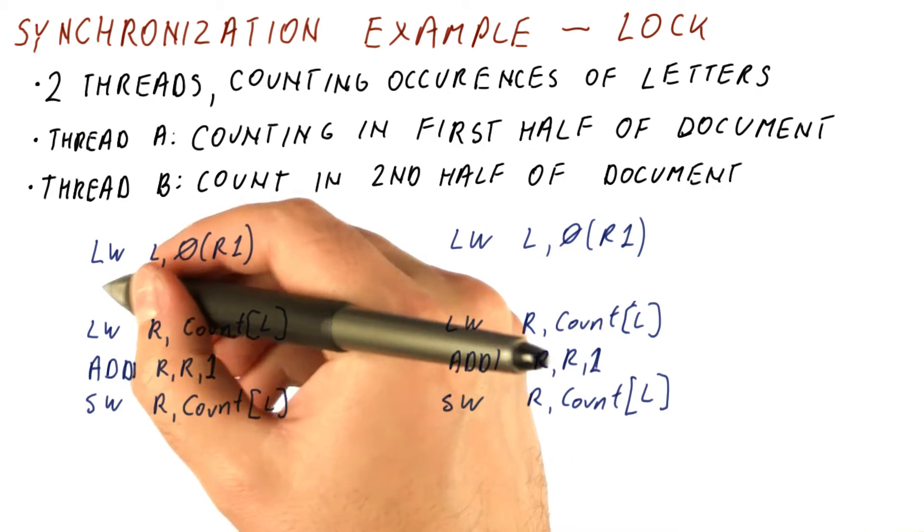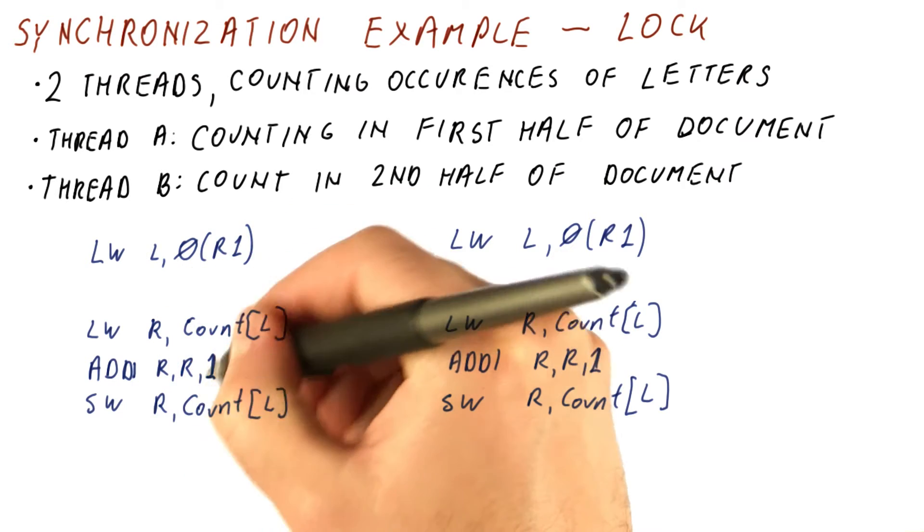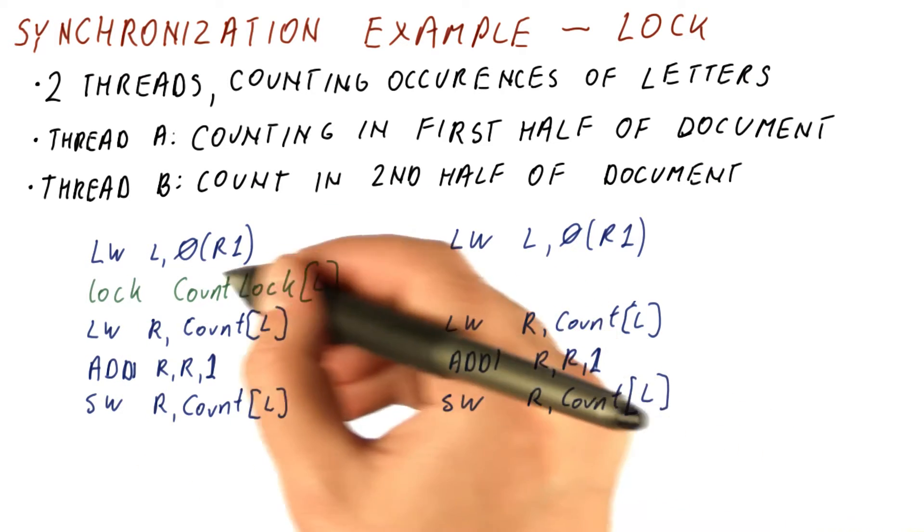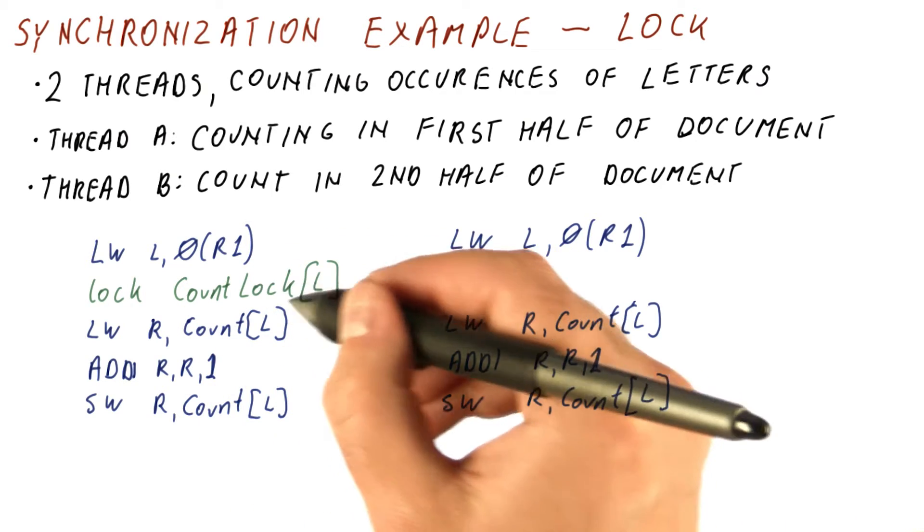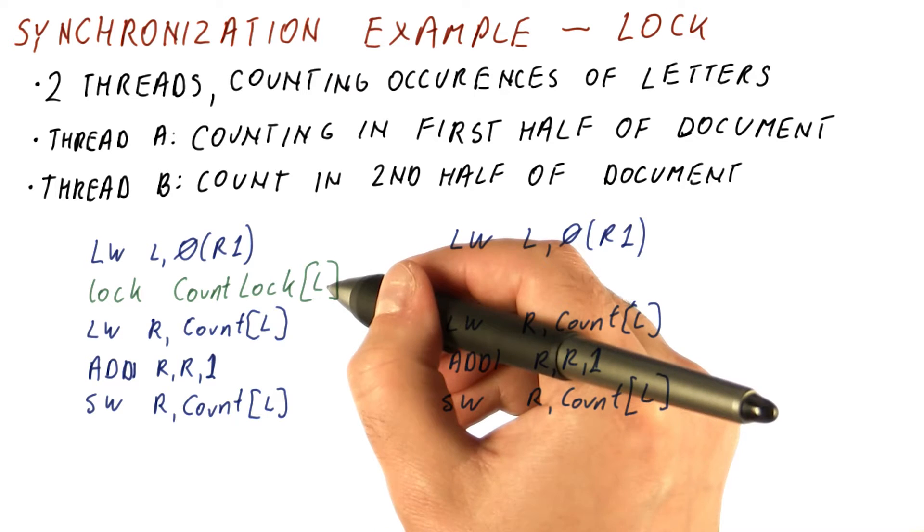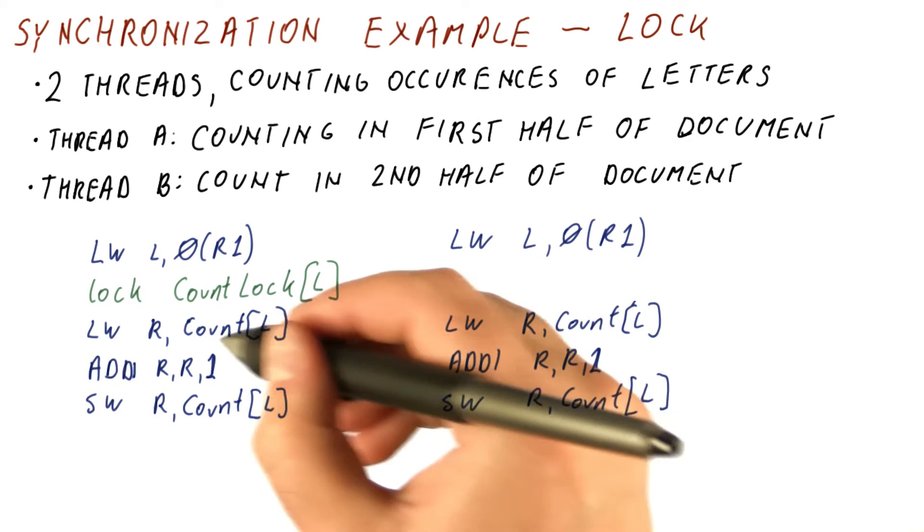So what we want here really is, before we get into the critical section, we need to lock a lock. Let's call that count_lock, that corresponds to a given element of this array. So count_lock[L] is a lock that corresponds to count[L].